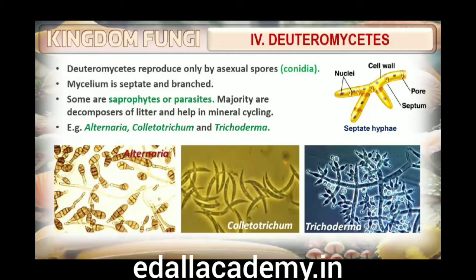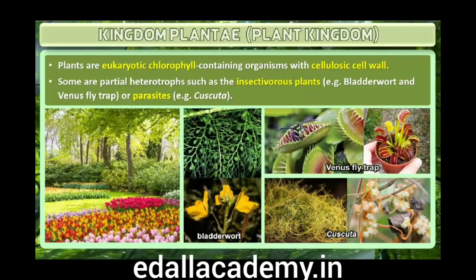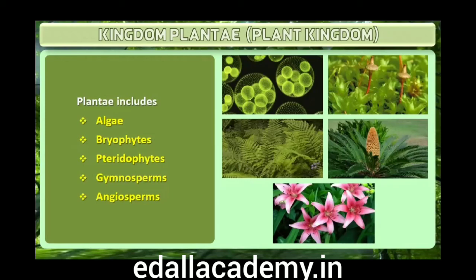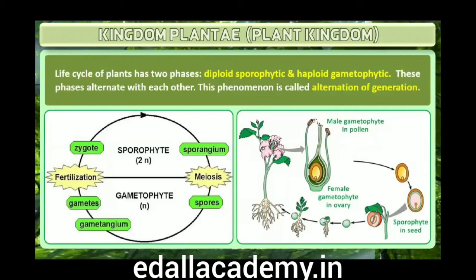2.4 Kingdom Plantae. Kingdom Plantae includes all eukaryotic chlorophyll-containing organisms commonly called plants. A few members are partially heterotrophic such as insectivorous plants or parasites. Bladderwort and Venus flytrap are examples of insectivorous plants, and Cuscuta is a parasite. The plant cells have a eukaryotic structure with prominent chloroplasts and cell wall mainly made of cellulose. Plantae includes algae, bryophytes, pteridophytes, gymnosperms and angiosperms. The life cycle of plants has two distinct phases — the diploid sporophytic and the haploid gametophytic — that alternate with each other. The lengths of these phases, and whether they are free-living or dependent, vary among different groups. This phenomenon is called Alternation of Generation.